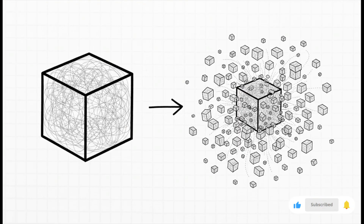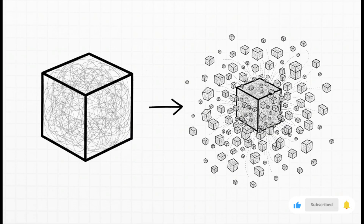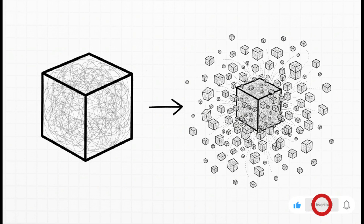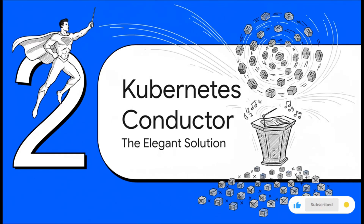It all starts with something we can call the microservice maze. The old way was to build one giant monolithic application — simple to deploy maybe, but an absolute nightmare to update. The new way: we smash that monolith into hundreds, sometimes thousands of tiny independent microservices, each living in its own container. This is fantastic for developers, but for the people who have to run the thing, it's a complete explosion of complexity. And right into this chaos steps Kubernetes — the grand conductor for this massive, noisy orchestra of microservices.